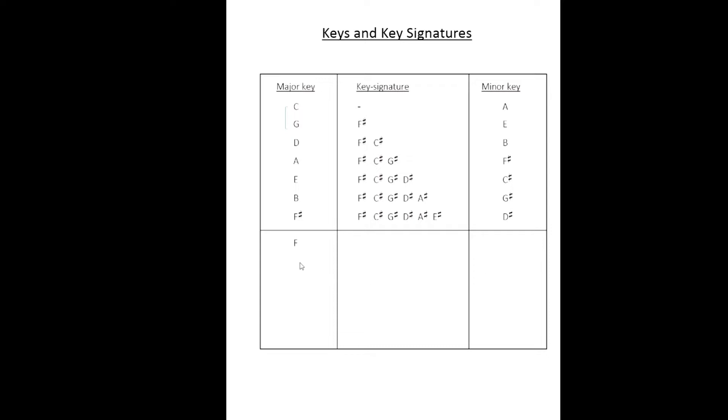Likewise, with keys on the flat side, we can start with F major, which has a key signature of B flat and the relative minor of D minor. By the circle of fourths from F major, we would arrive at B flat major, which has a key signature of B flat and E flat. A perfect fourth from D minor would form G minor. Using the same system, we can build up perfect fourths from each of these keys and key signatures, and we can fill out the table.